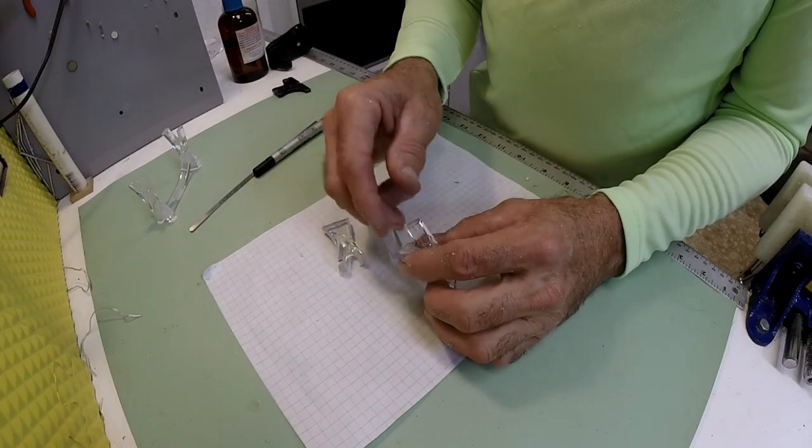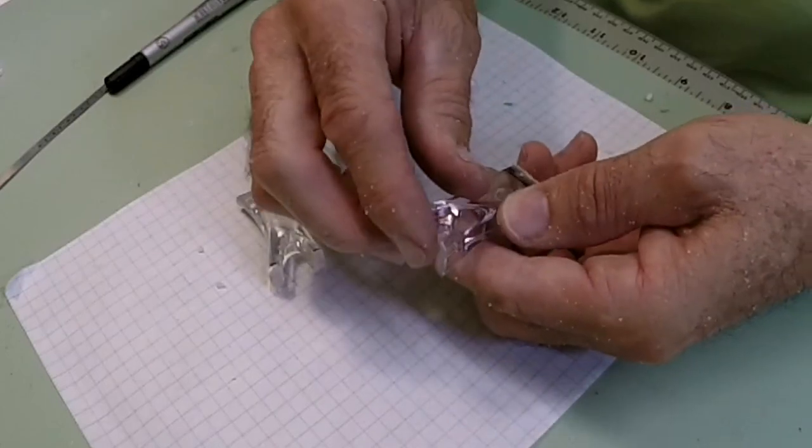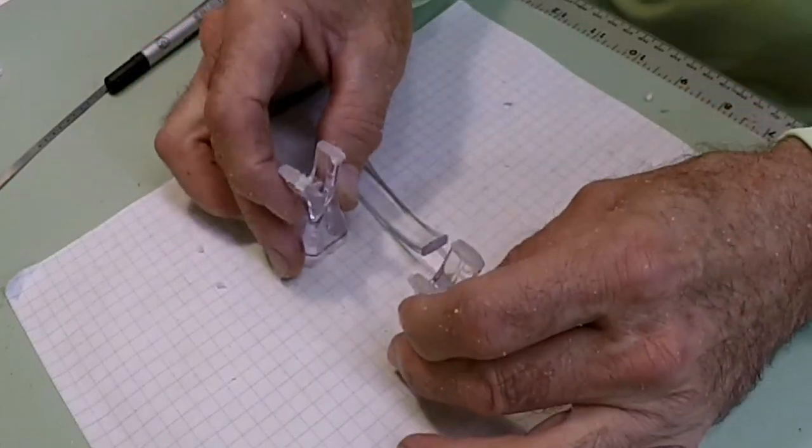So here are our components. We still got to kind of do some sanding, a little bit of polishing, a little bit of shaping here for this upright. These are the cradles.